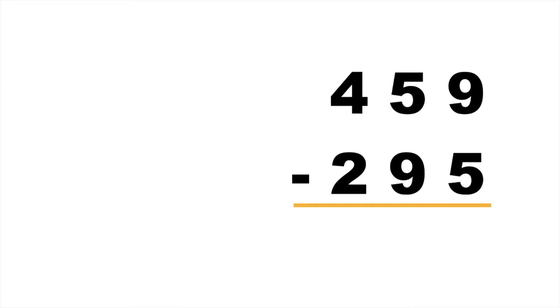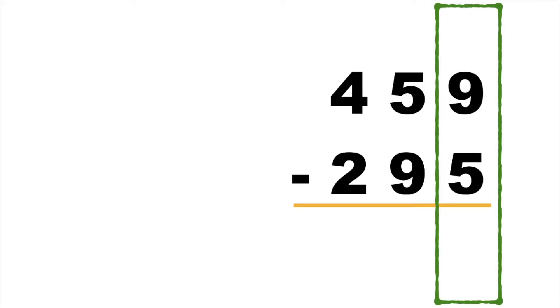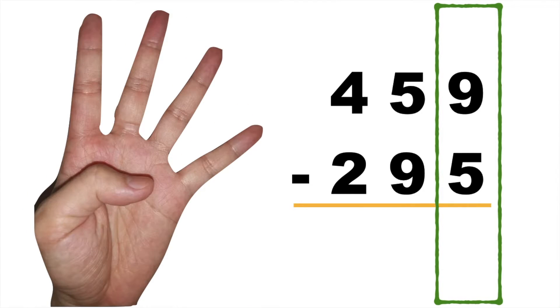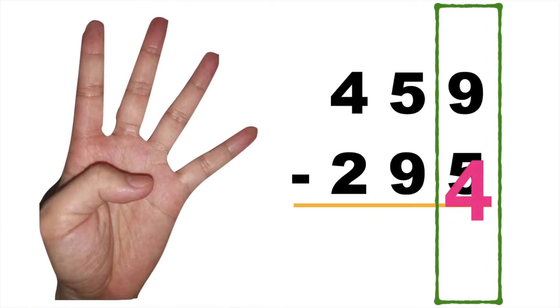Let's have our next example: 459 minus 295. Again, children, in subtracting numbers, we're going to start at the ones place. 9 minus 5 — 5 on your mind, let's count forward until we reach 9: 5, 6, 7, 8, 9. 9 minus 5 is equal to 4.